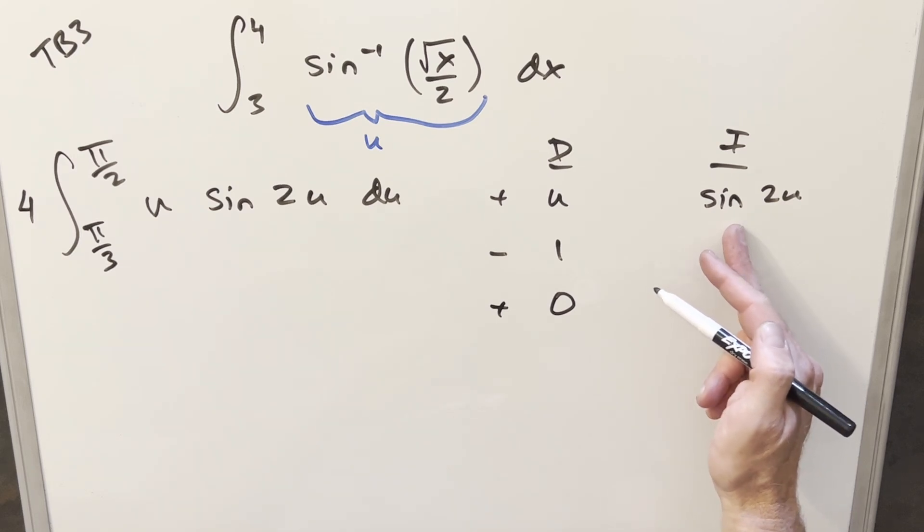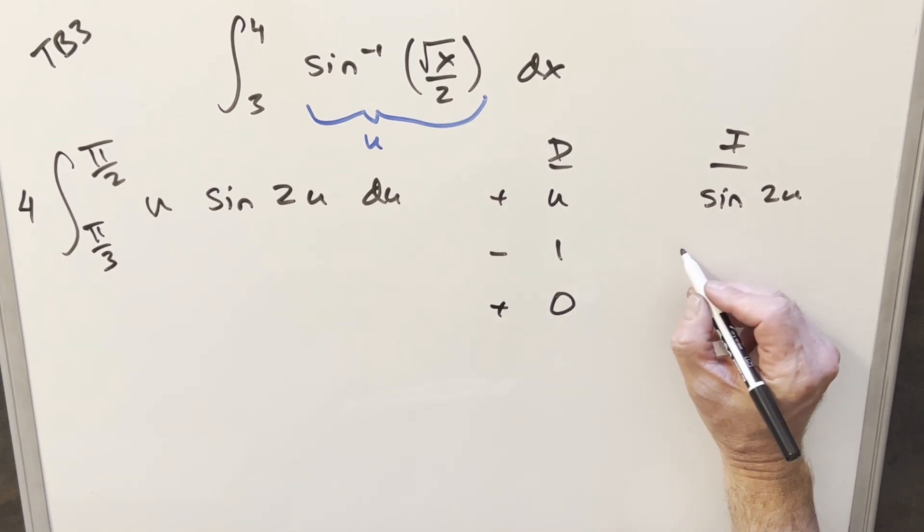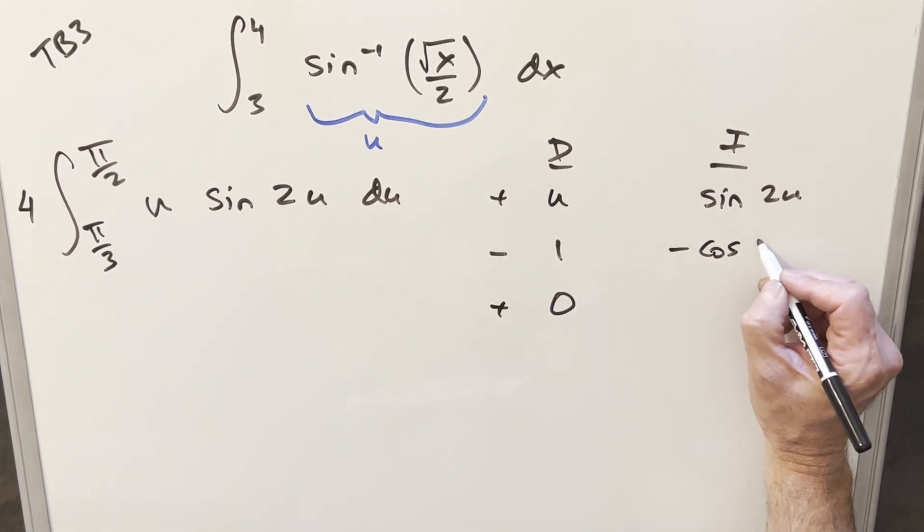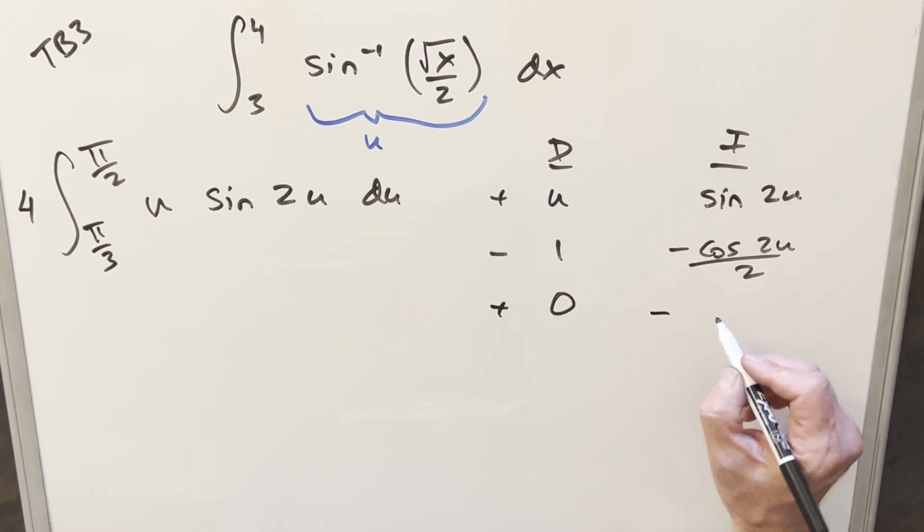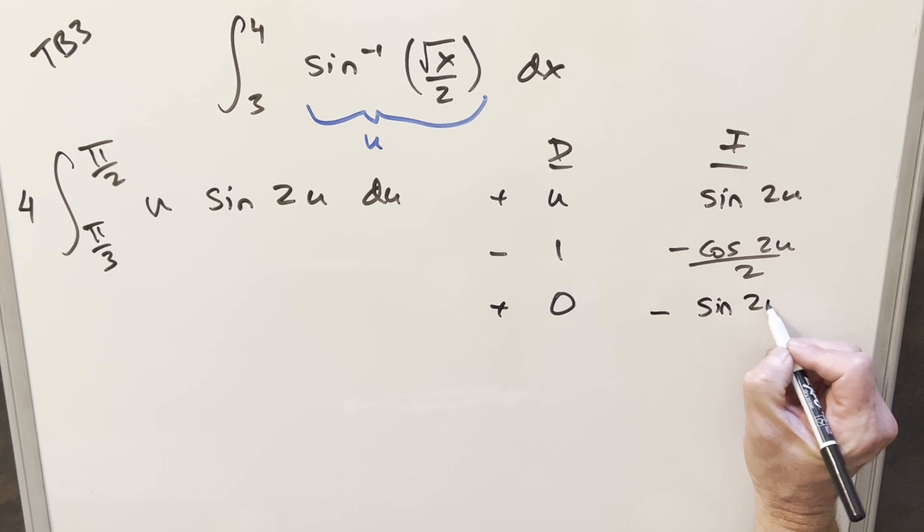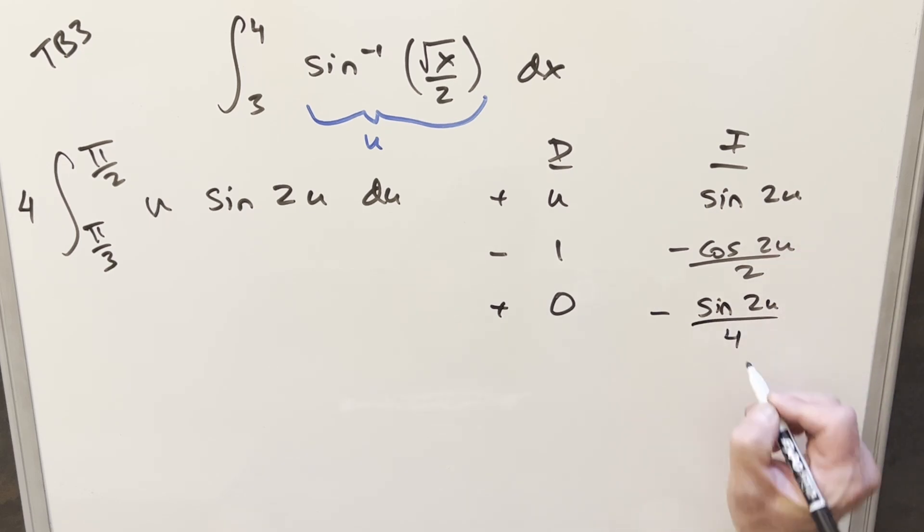Integral of sine two u, that's going to become minus cosine two u over two. Integrate one more time and it's going to become minus sine two u. Pull out another two and now we're going to have a four here into the denominator.